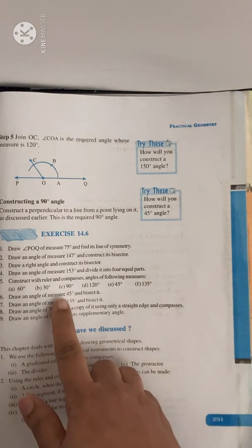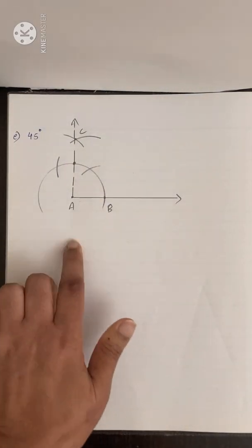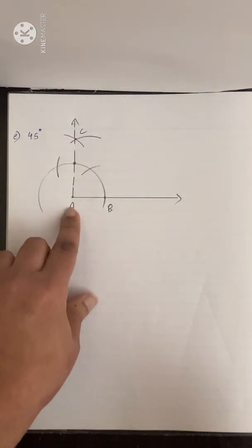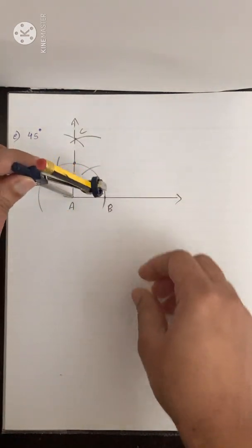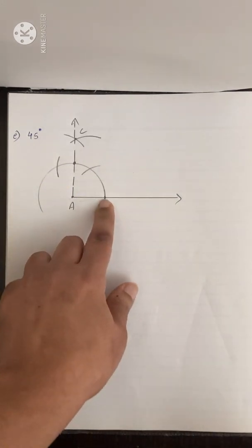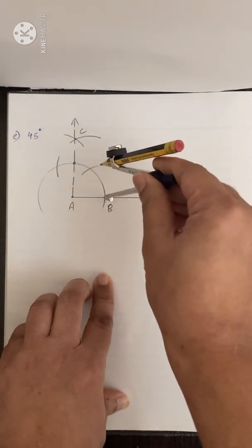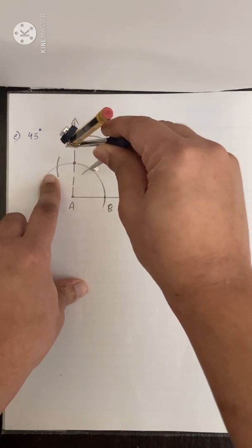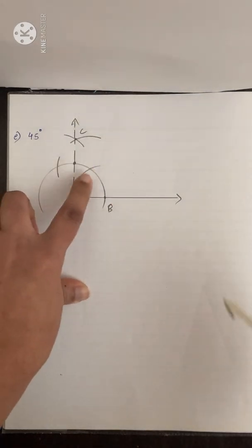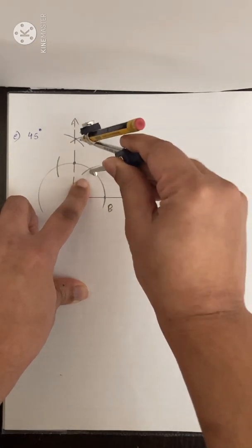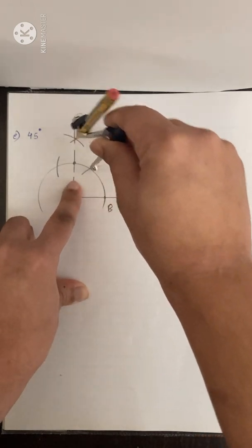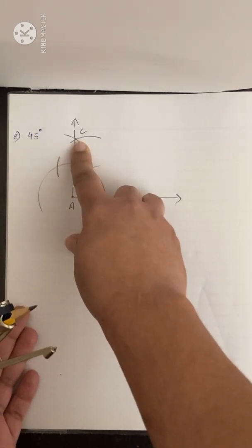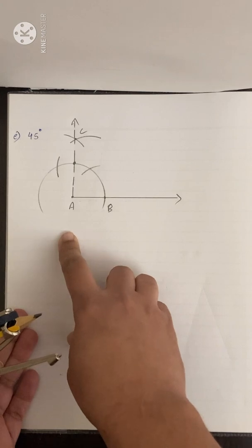Same as we did before, draw a ray and mark a point A. With A as center, take a convenient radius and draw an arc. Mark this point as B. With B as center, draw an arc with the same radius — this is 60 degrees. With the next point as center, draw another arc — this is 120 degrees. Now, without changing the compass radius, with that point as center draw an arc, and with the next point as center draw another arc. The two arcs intersect at point C. Join A and C — you get 90 degrees.